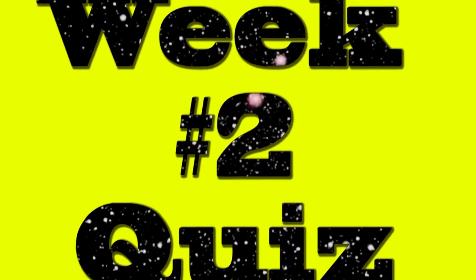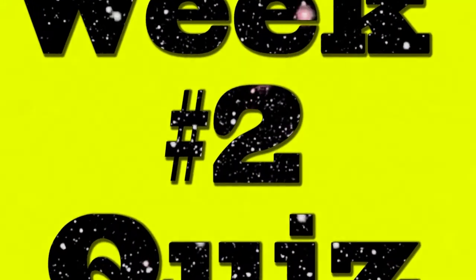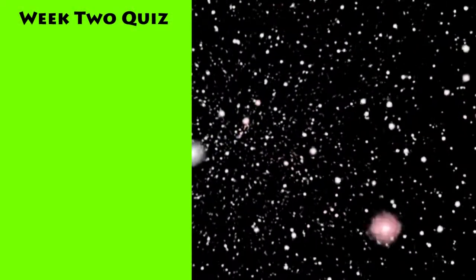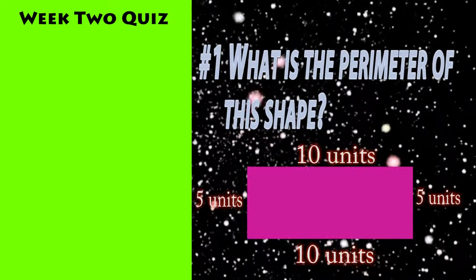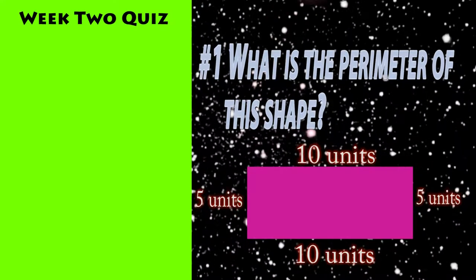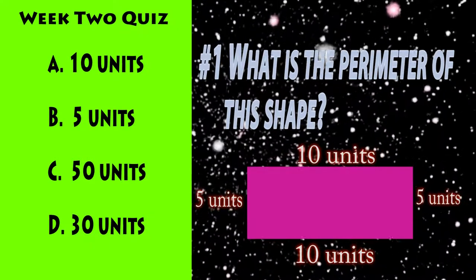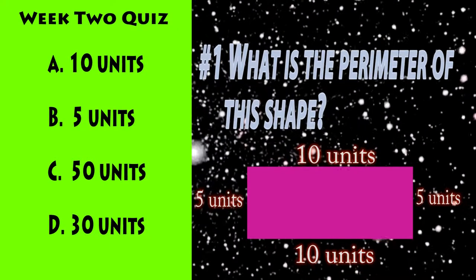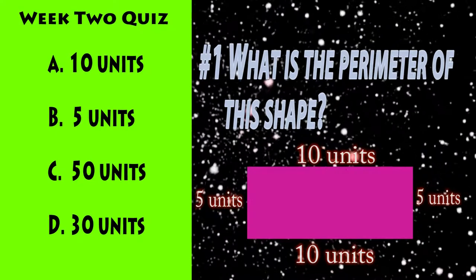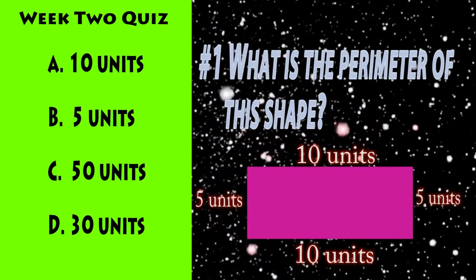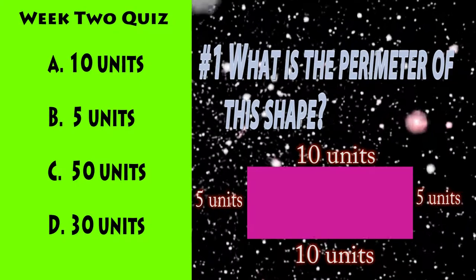Week 2 Quiz. Number 1. What is the perimeter of this shape? 10 units, 5 units, 50 units, or 30 units. What is the perimeter of this shape?